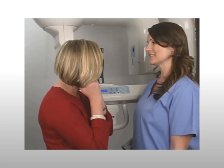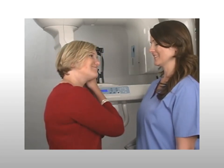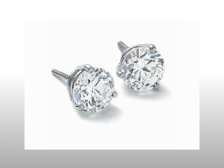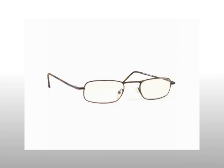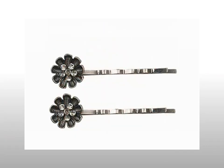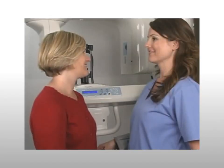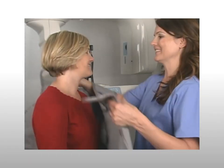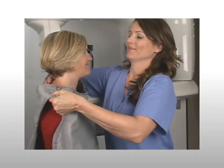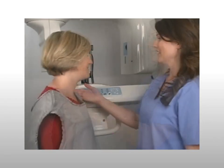Before the patient enters the machine, ask the patient to remove any metal objects above the neck, including jewelry, glasses, hearing aids, prosthesis, metal hair clips, or other metal objects. Place the lead apron on the patient and instruct the patient to enter the machine from the side.